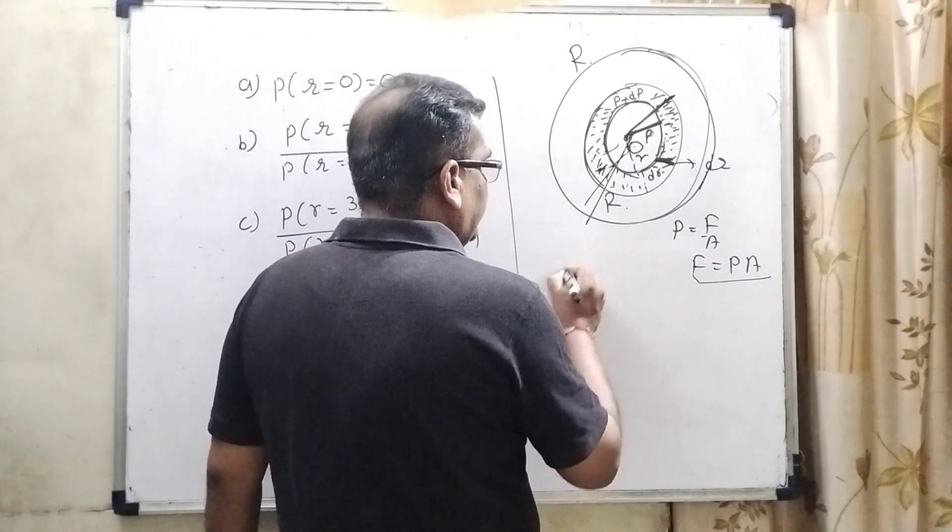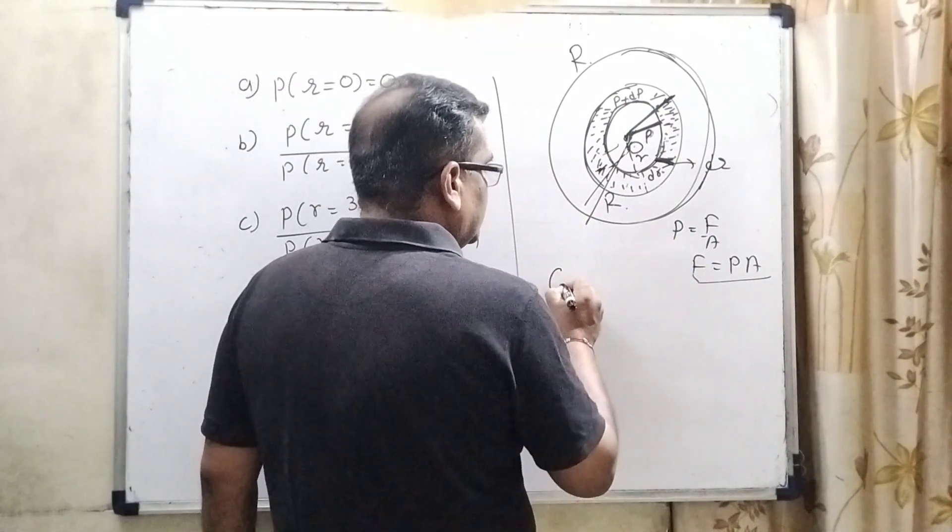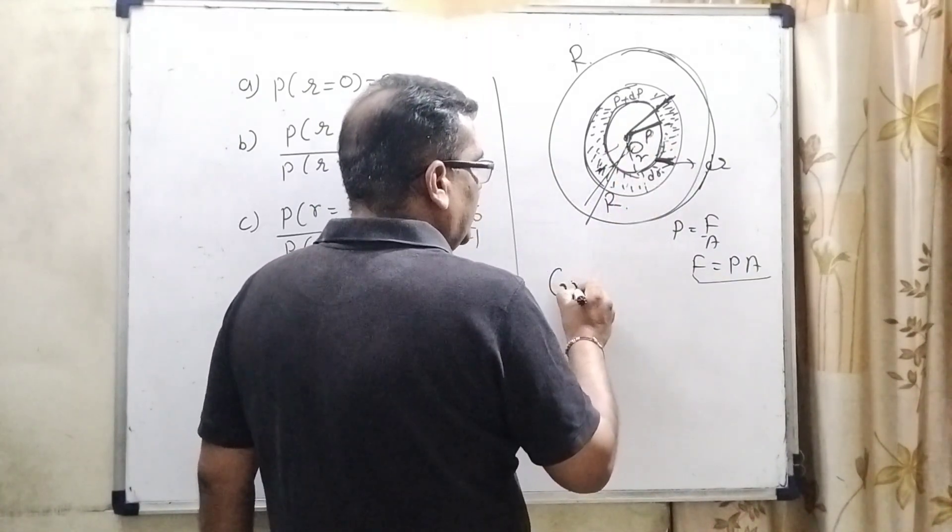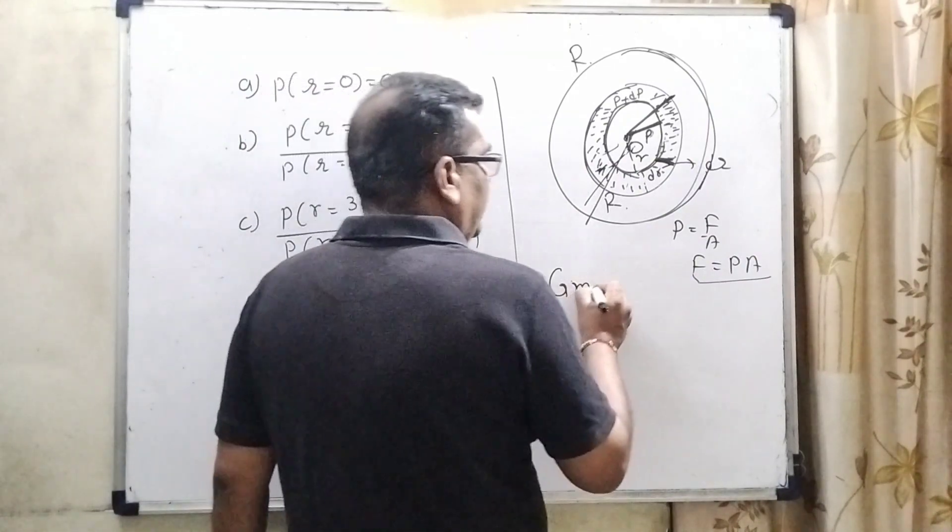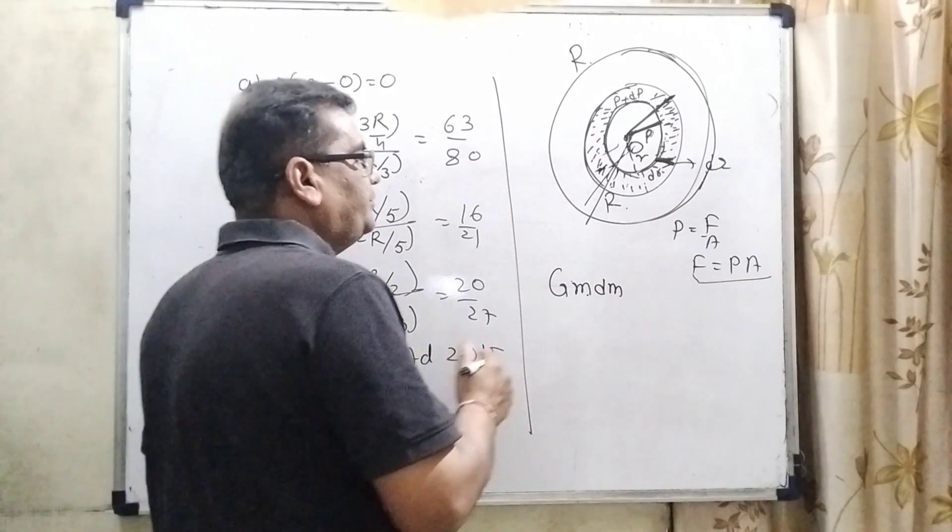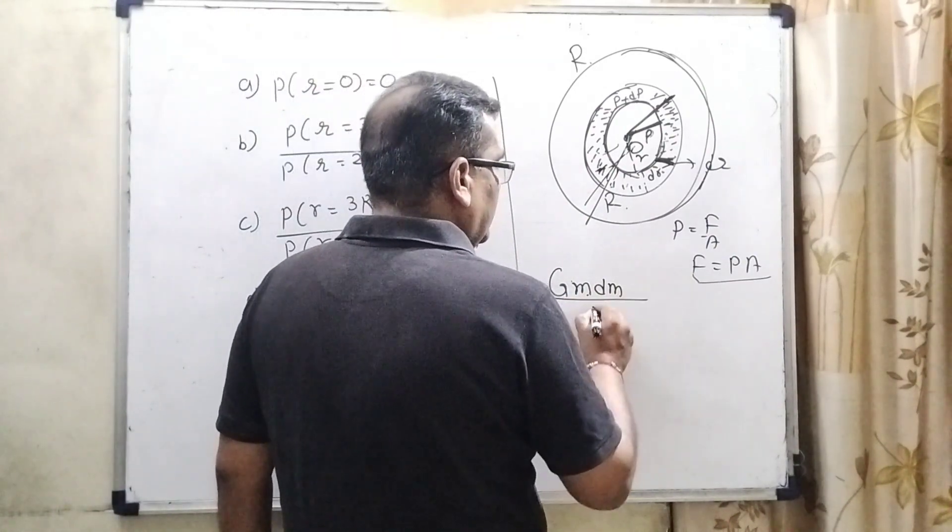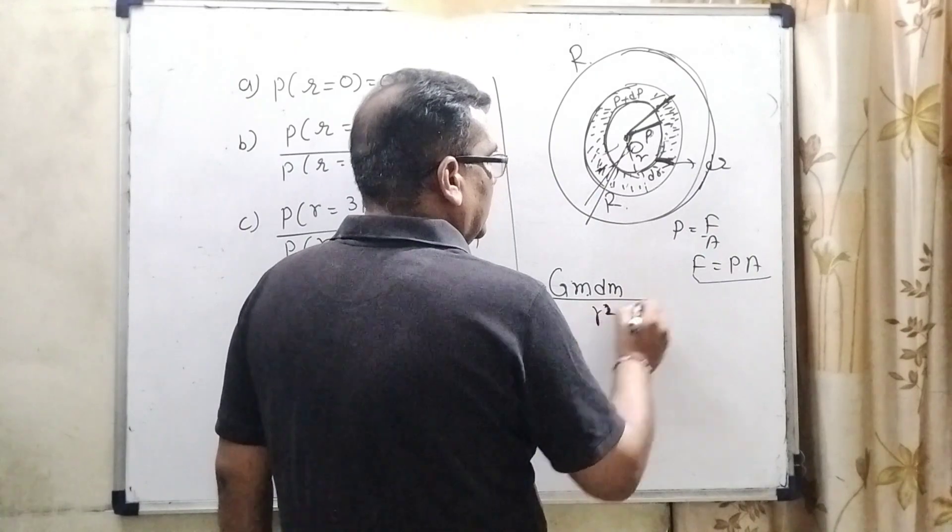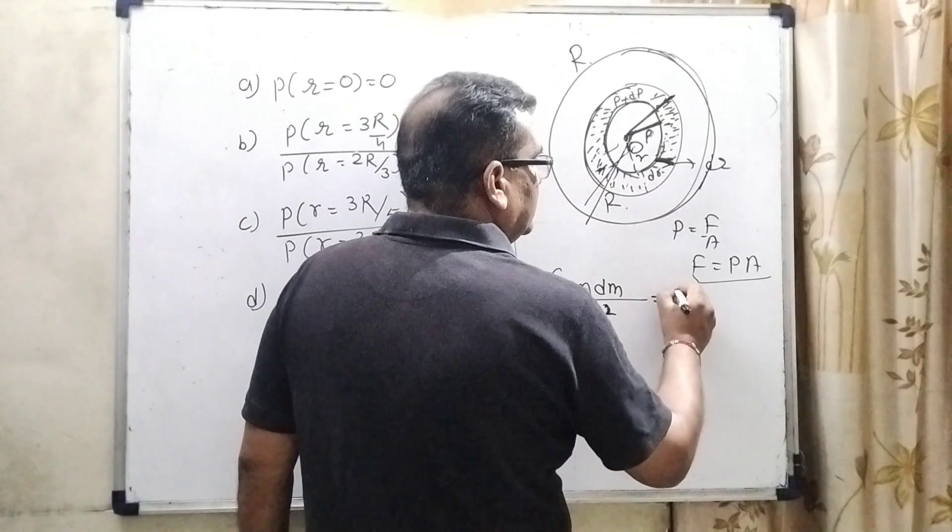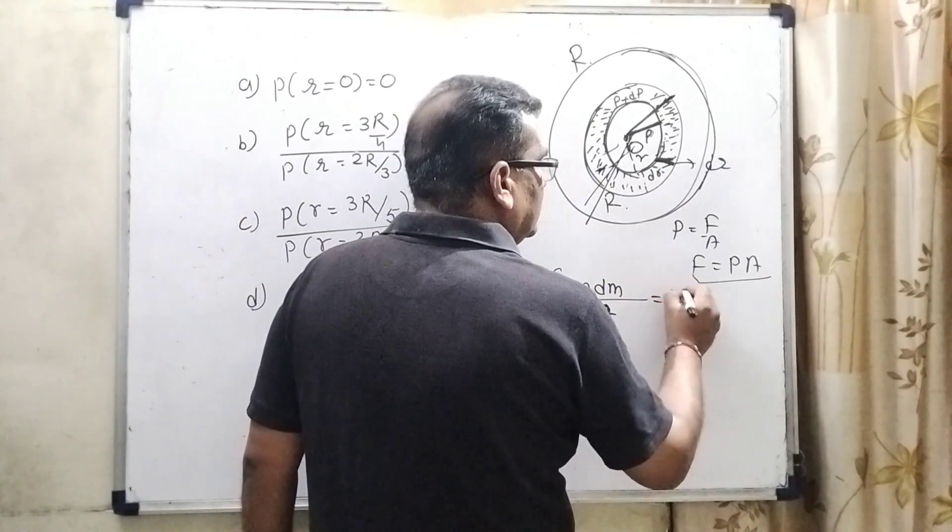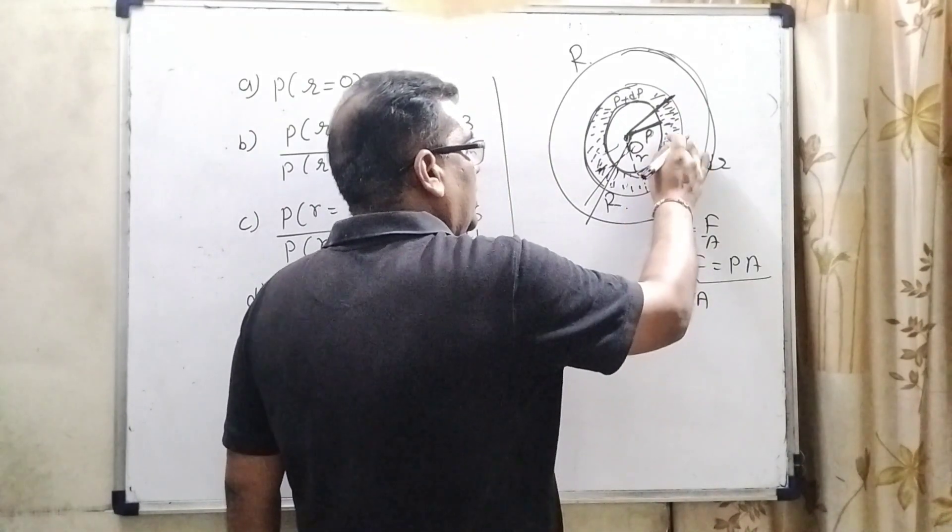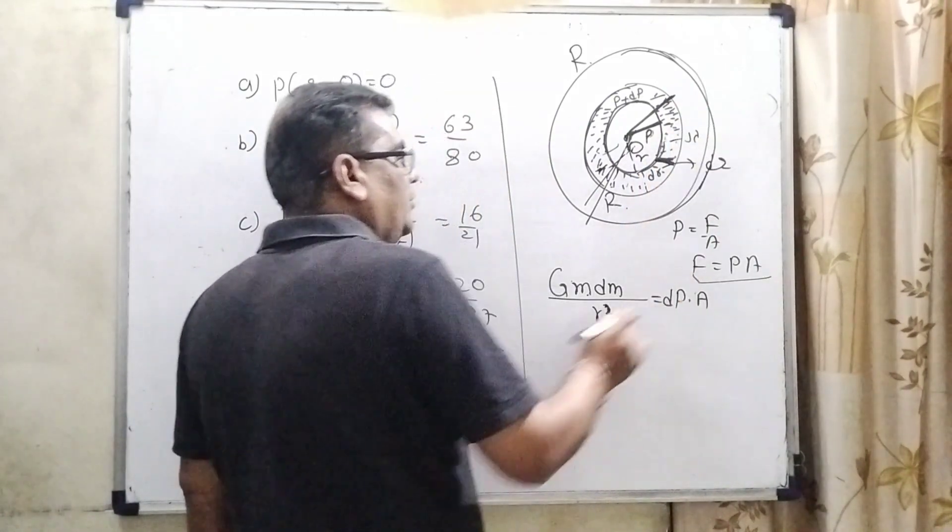So what is the gravitational force? Let us consider, inside the mass of the liquid is small m, and dm, dm means mass of this element is G small m dm upon r square. This pressure equals this pressure and dP into area.